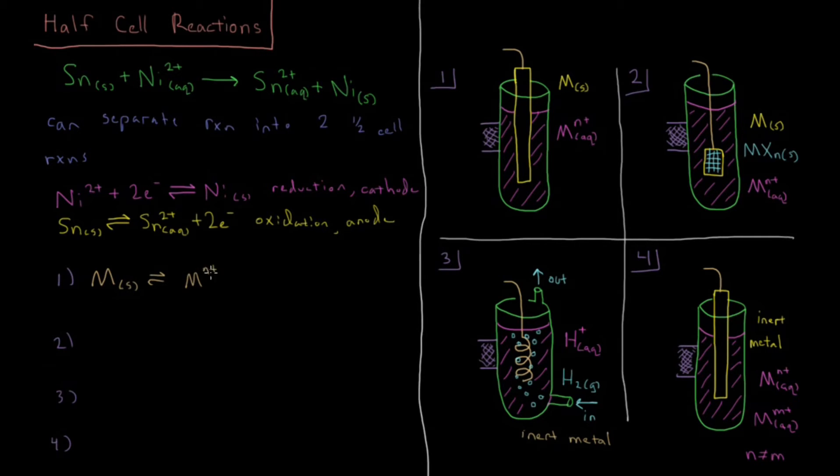And then that produces aqueous metal ions M^n+, where n is however many electrons you're going to produce and whatever the charge on the ion is, plus n number of electrons. In both of these reactions n would be two.